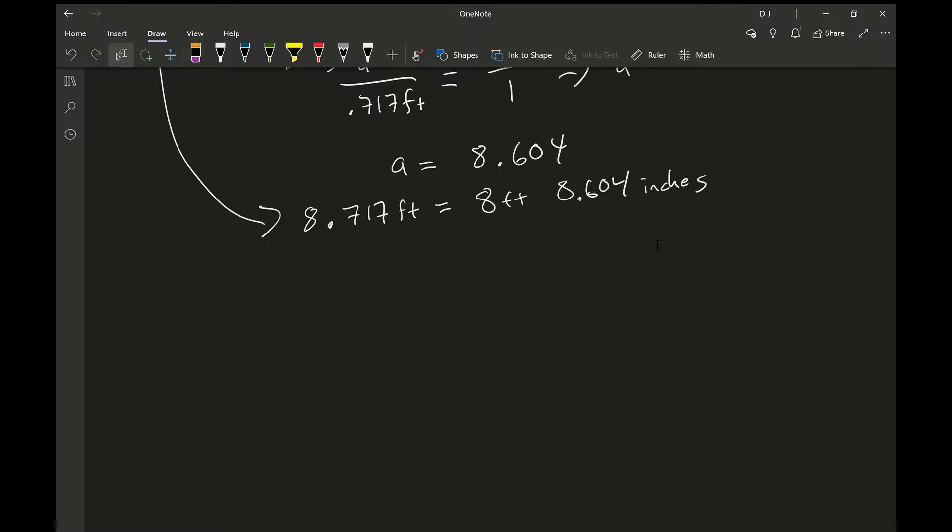If we want to be up to quarter of inches, then we would look at 0.604 inches. If we wanted quarter of inches, then there's four quarters of an inch into one.